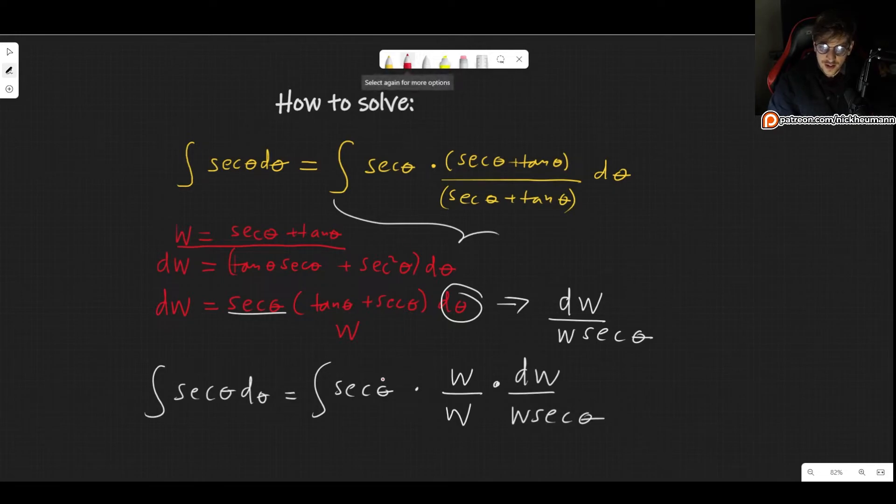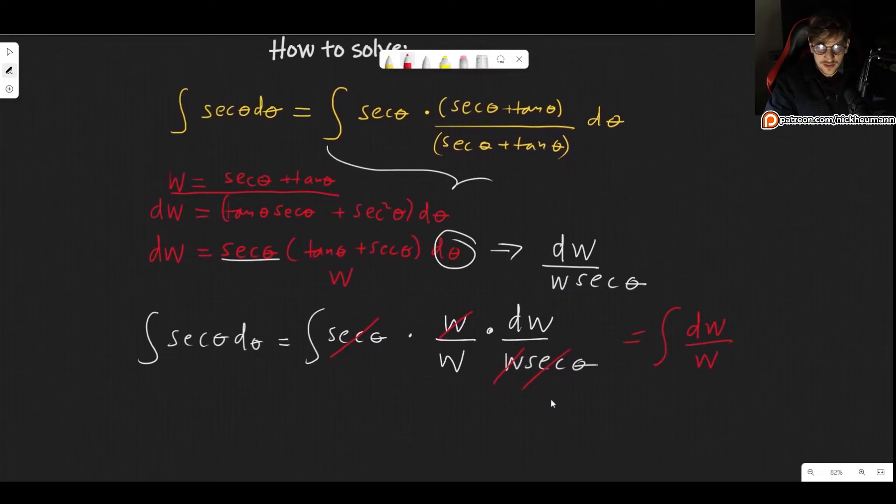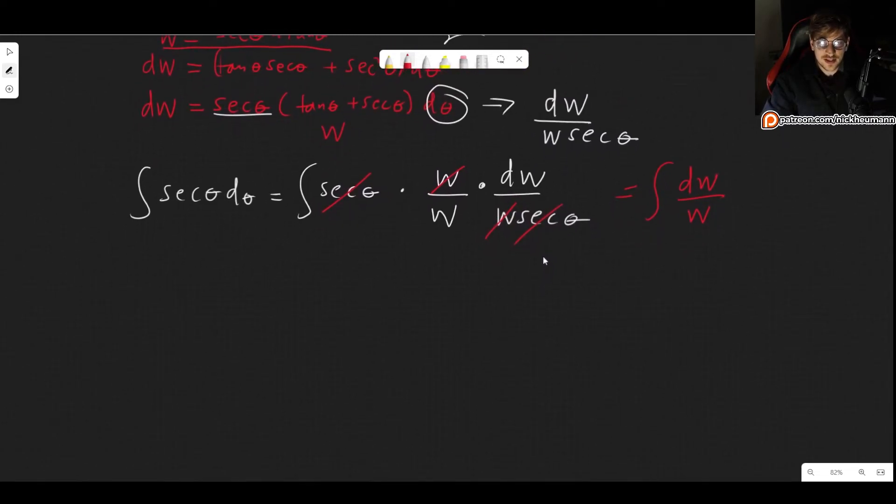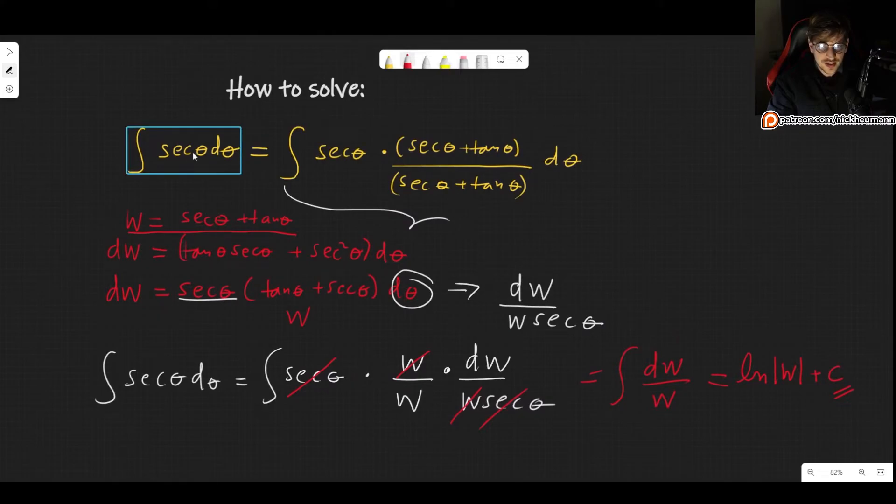So here we see that the secant cancels out. That was the purpose of this entire thing. Our purpose was to get rid of secant, which was the thing that was making everything difficult. And one w cancels out with this one. So we end up with the integral of dw over w. And this one is an integral that I'm sure we have seen before. This is simply the natural log of the absolute value of w plus some constant.